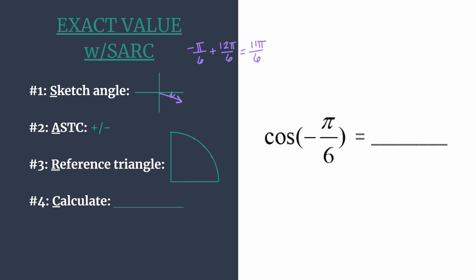And that's coterminal to negative pi over 6. So if you wanted to instead find the cosine of 11 pi over 6, you would get the same exact value as you will for cosine of negative pi over 6, since they are coterminal angles.